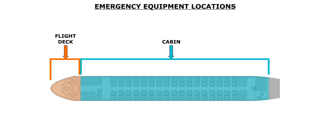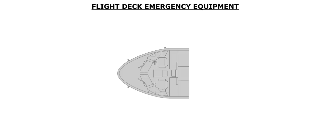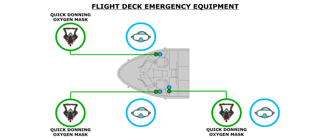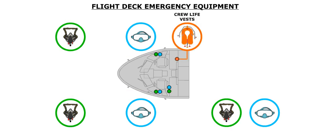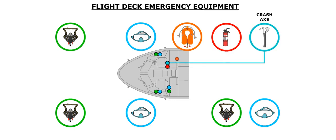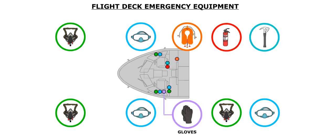Emergency equipment is located in the flight deck and in the cabin. Each crew member location in the flight deck has smoke goggles and a quick donning oxygen mask. The other equipment in the flight deck consists of life vests, a portable halon fire extinguisher, a crash axe, fire-resistant gloves, and flashlights.